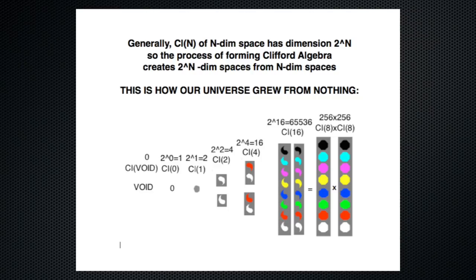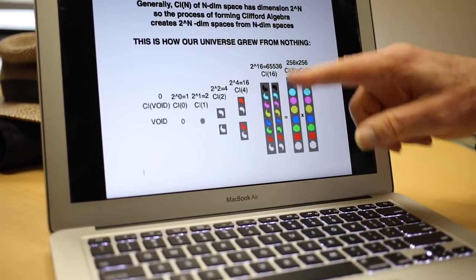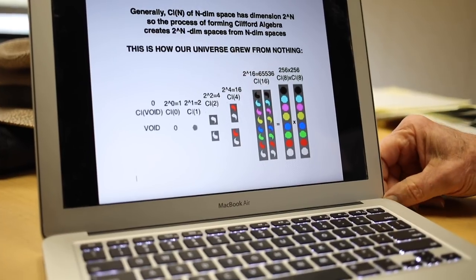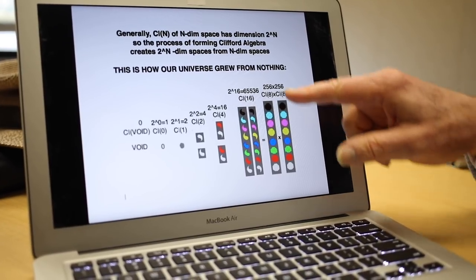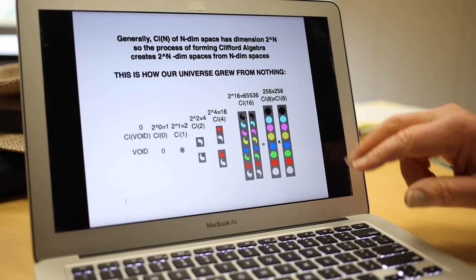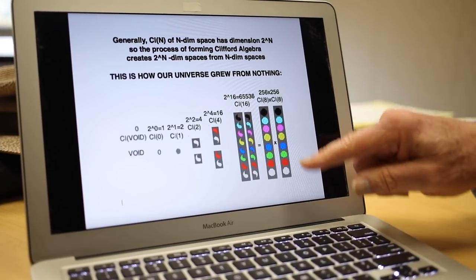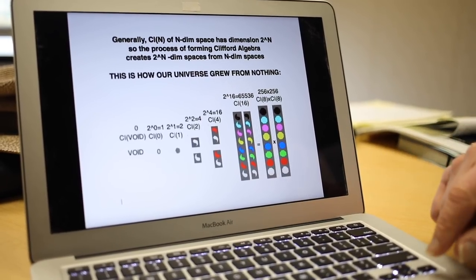His basic idea is the whole universe is formed by starting with nothing, the empty set, the void, and going up in sequence: Clifford of zero gives you one, Clifford of one gives you two, Clifford of two gives you four, Clifford of four gives you sixteen. By that time you've gotten up to 65,536 dimensions and it factors into two copies of Clifford eight, 256 by 256.